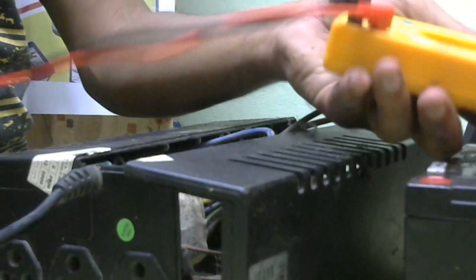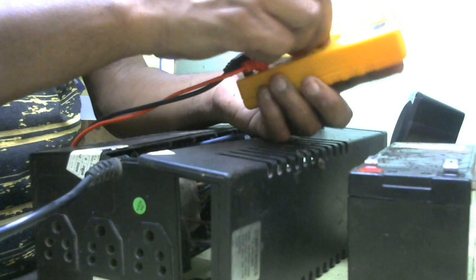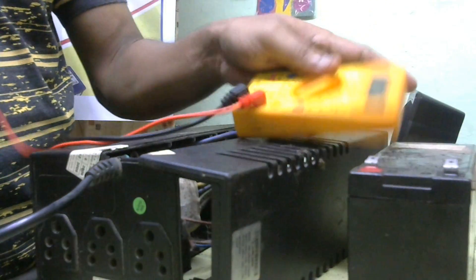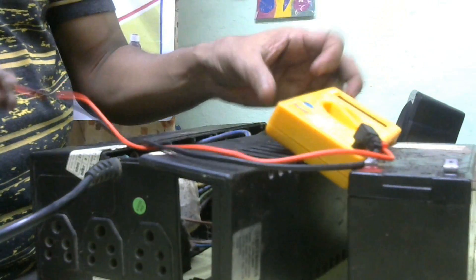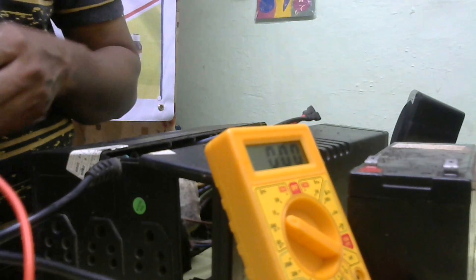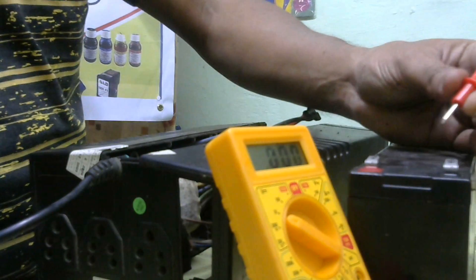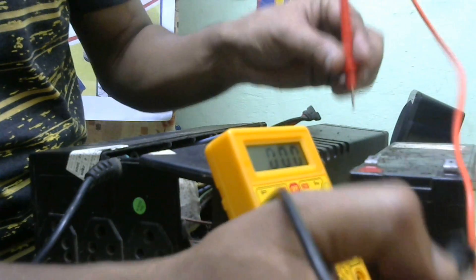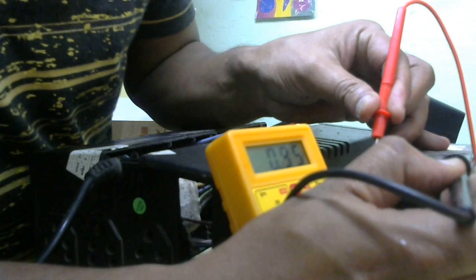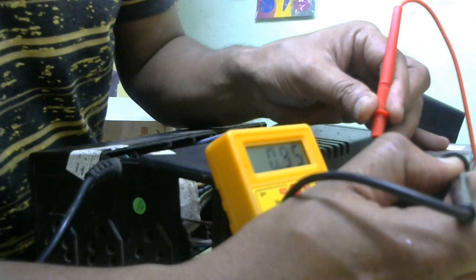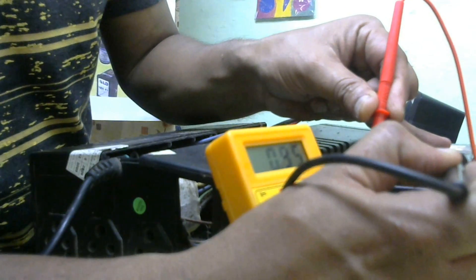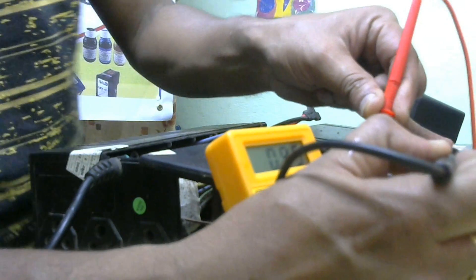I'll take a multimeter and select DC voltage range at 20 volts. I'll check if the battery is working or not. The battery is completely dead - it is below 1 volt. I charged it for 24 hours but the battery did not charge.